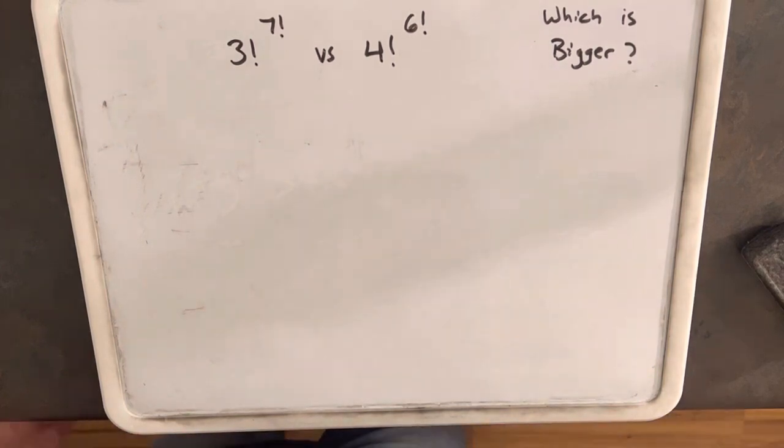Which is bigger, 3 factorial to the 7 factorial or 4 factorial to the 6 factorial?